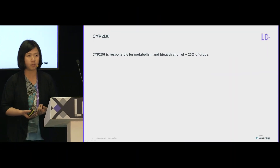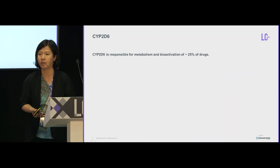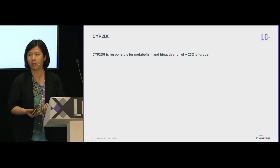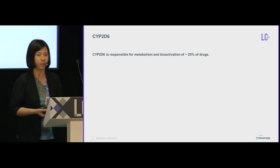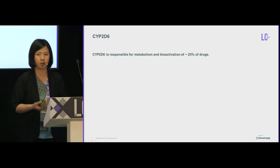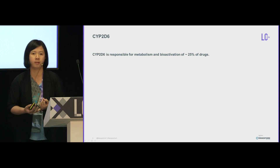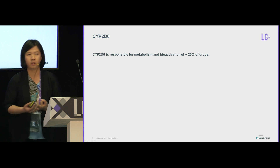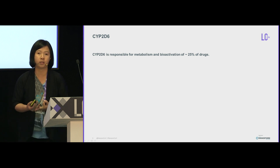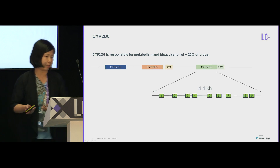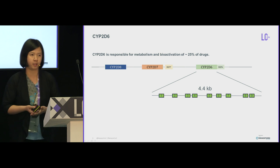So why and what is CYP2D6? It's a gene that codes for the liver enzyme CYP2D6, which is responsible for the breakdown and also activation of about a quarter of all drugs available — so it affects a lot of people. It includes cancer drugs such as tamoxifen, many psychiatric drugs, and also the commonly used analgesic codeine. It's also a very interesting and complicated gene.